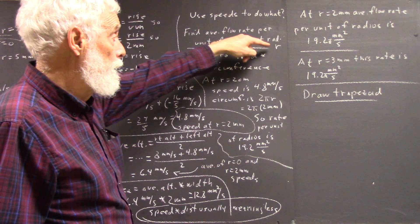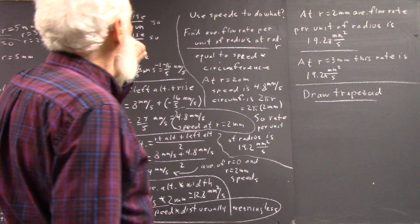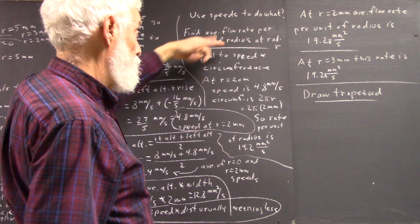Find the average flow rate per unit of radius r. And the definition of that was given. It's equal to the speed times the circumference at that radius.